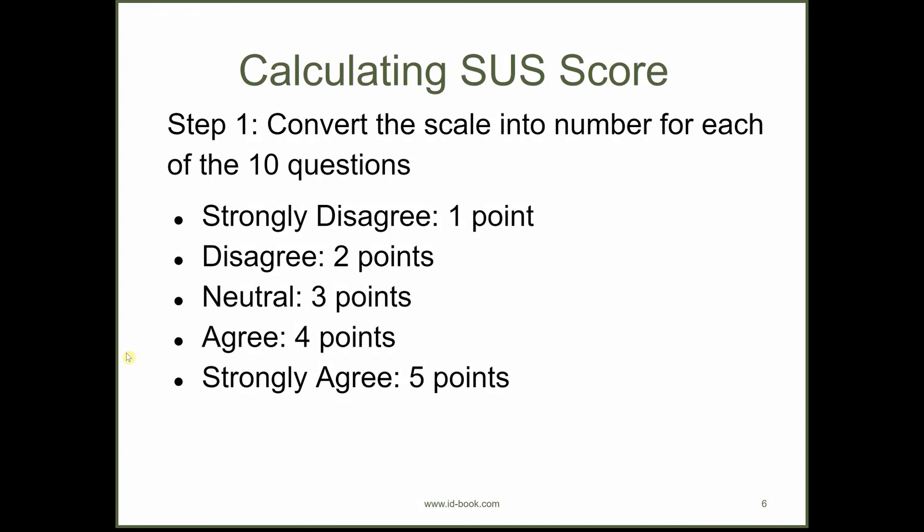In order to calculate an SUS score, we have to follow certain steps. The first step is that we convert each response to a number. The strongly disagree answers are mapped to one point, and strongly agree responses are given a point of five, and all the other responses in between get the numbers in between.